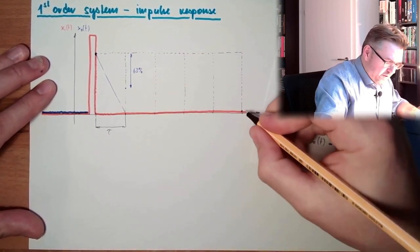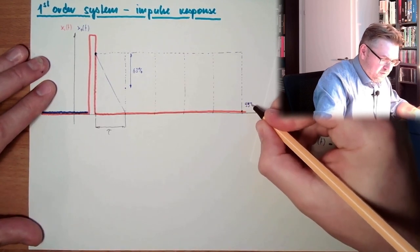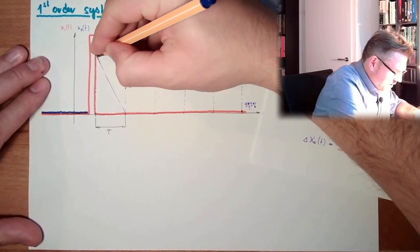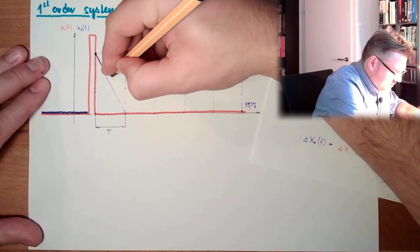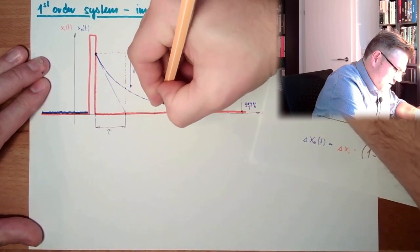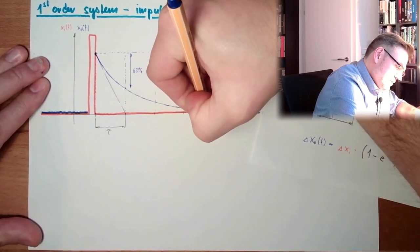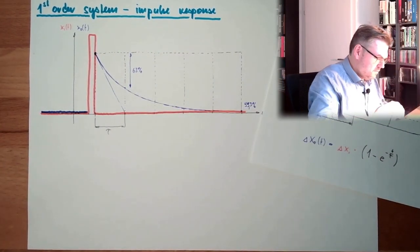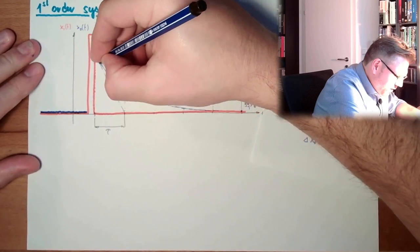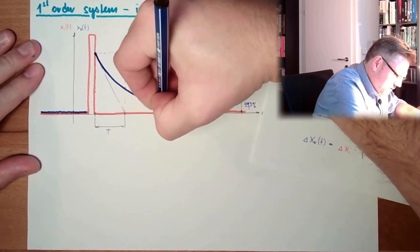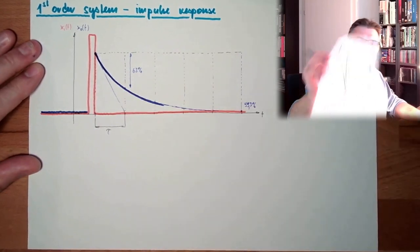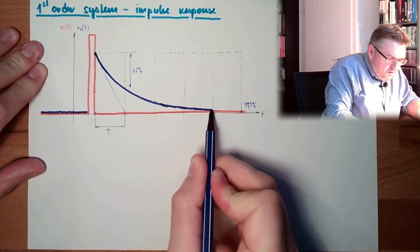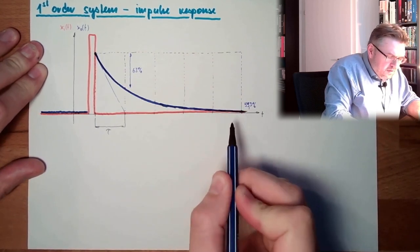And we make this transition exactly as we made it with the step response. It's exactly the same function. It cannot be different because simply that's in the nature of our first order system. That's it.